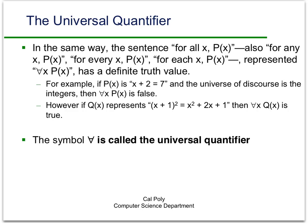If P(x) is true for all x in the domain of discourse, then 'for all x, P(x)' is true; if it's not true for even one of them, it's false. For example, if P(x) is x plus 2 equals 7 with the integers as the domain, then 'for all x, P(x)' is false — since putting x equals 1 gives 1 plus 2 is not equal to 7. However, if Q(x) represents the identity that x plus 1 squared equals x squared plus 2x plus 1, then 'for all x, Q(x)' is true — assuming the domain is the integers or real numbers. This symbol is called the universal quantifier.